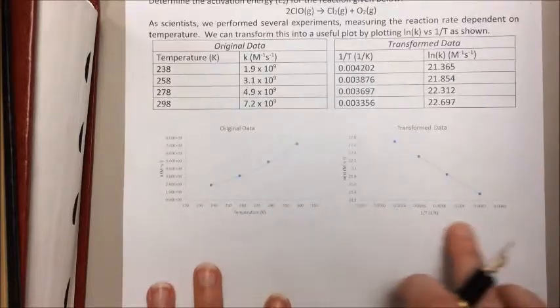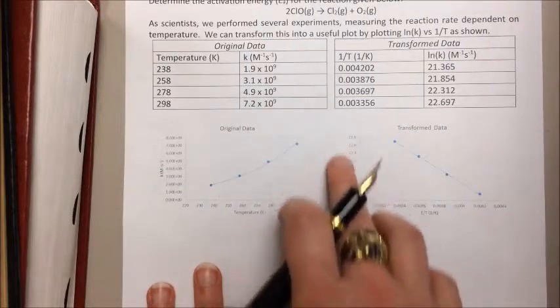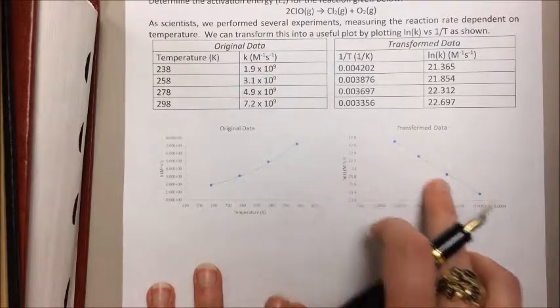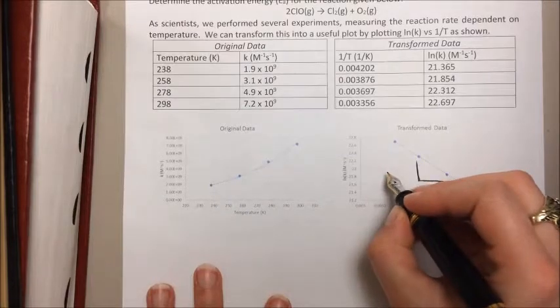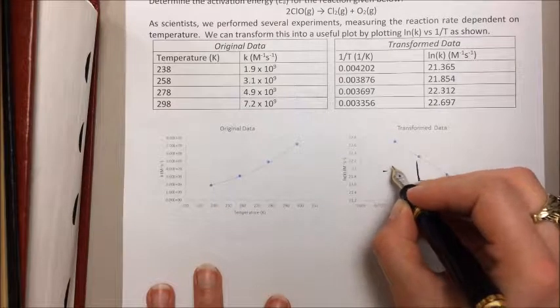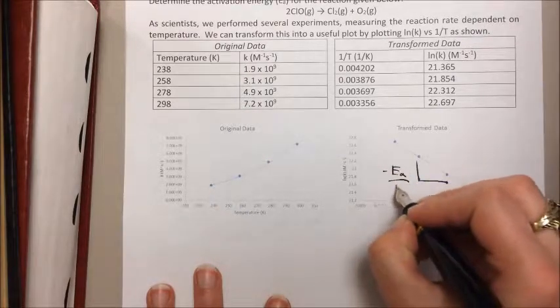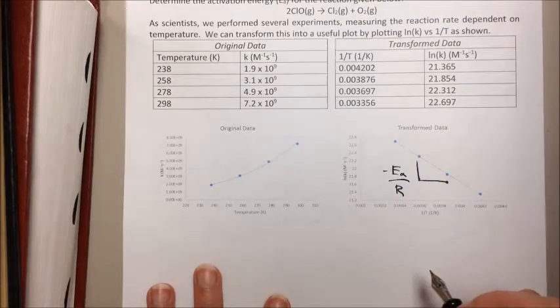Now I've plotted 1 over T versus that natural log. Now I have a nice straight line and because of the way the math works out, the slope of this line is equal to negative Ea over R, a nice value that I can calculate.